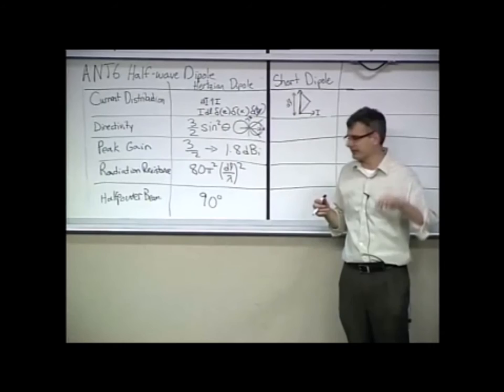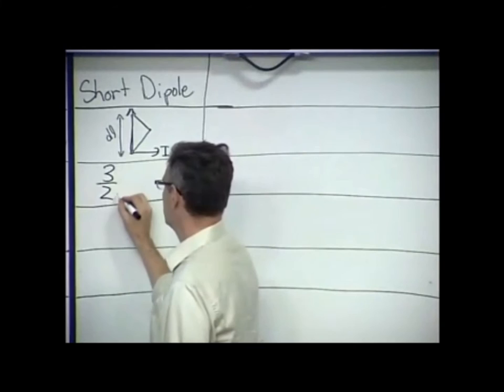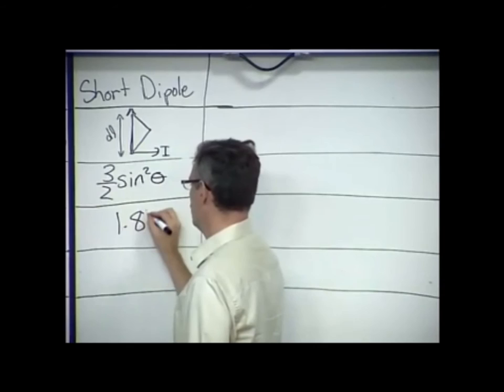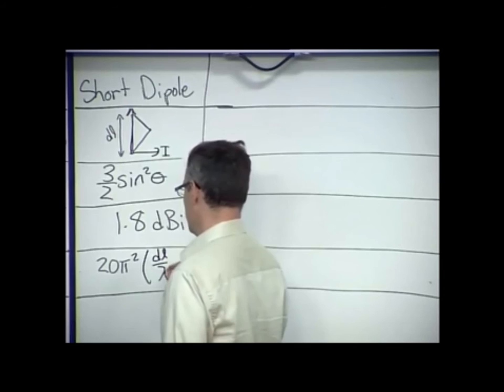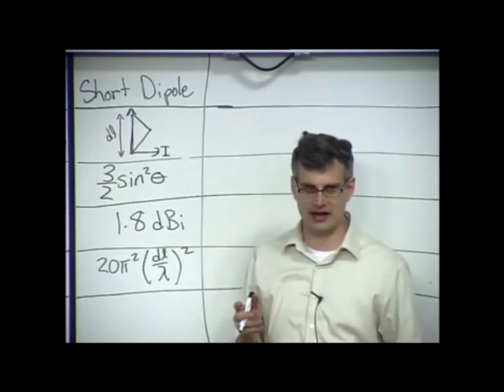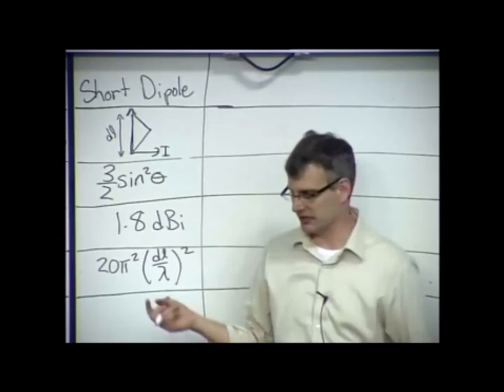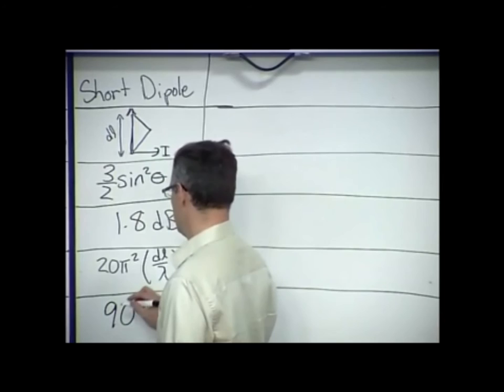What is the directivity? Again, it's three halves sine squared theta. What is the peak gain? It's also 1.8 dBi. What is the radiation resistance? This is the only area where it actually changes. It's 20 pi squared DL over lambda quantity squared. So, it's even smaller. This kind of emphasizes the difficulty we have of building these electrically small antennas. It's hard to get power into and out of them because their impedance is so low. Otherwise, half-power beam width is also 90 degrees.